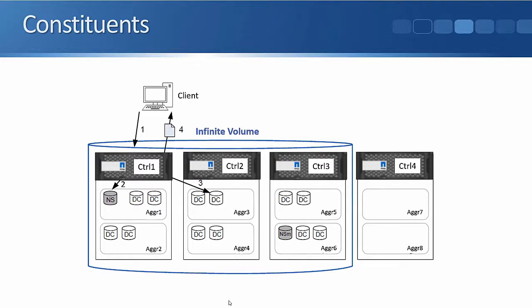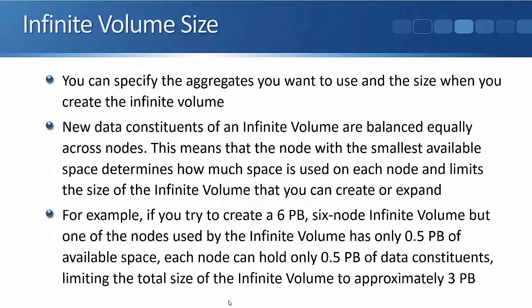Here we've got a client that sends in a read request for a file in the infinite volume. The read request goes to the namespace constituent, which is in charge of finding on which aggregate that file is. It will identify the particular data constituent that the file is on, and the file will be served to the client from there.